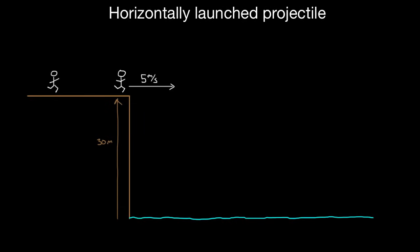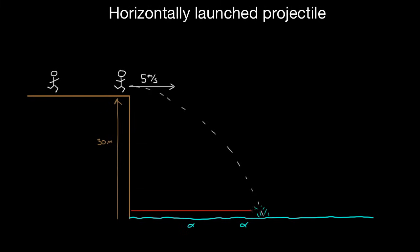So 30 meters tall. They launch, they fly through the air. There's water down here. They initially went horizontally and then start to fall down, eventually splashing into the water. We want to know — here's a question you might get asked — how far did this person go horizontally before striking the water?